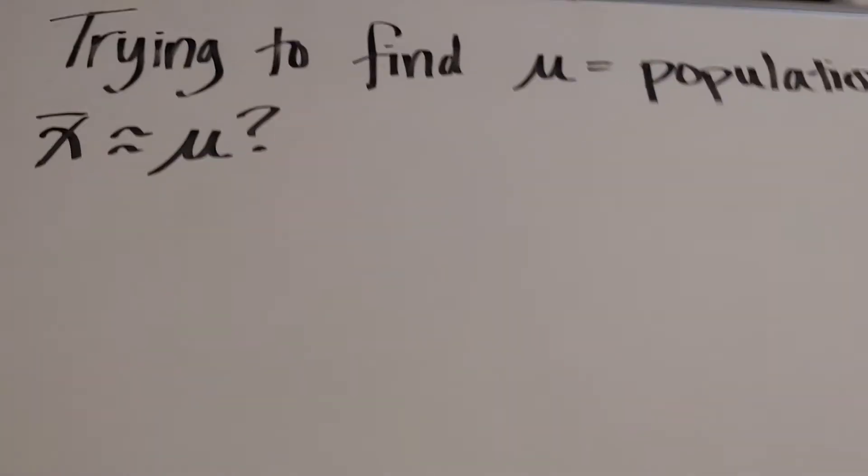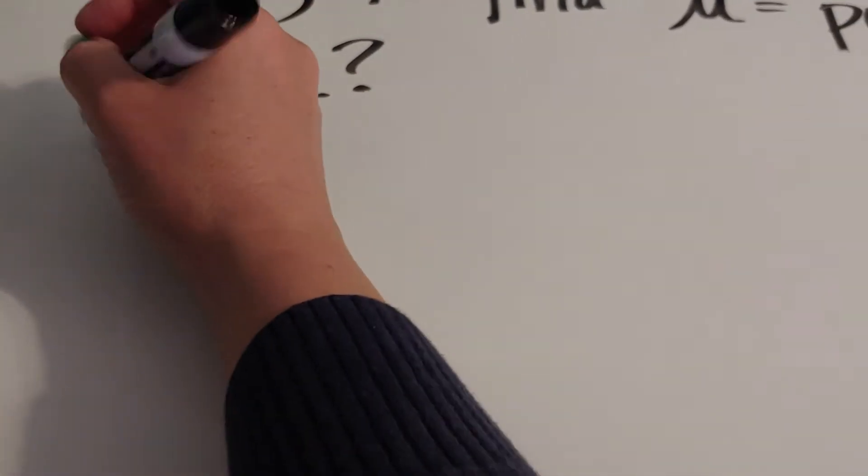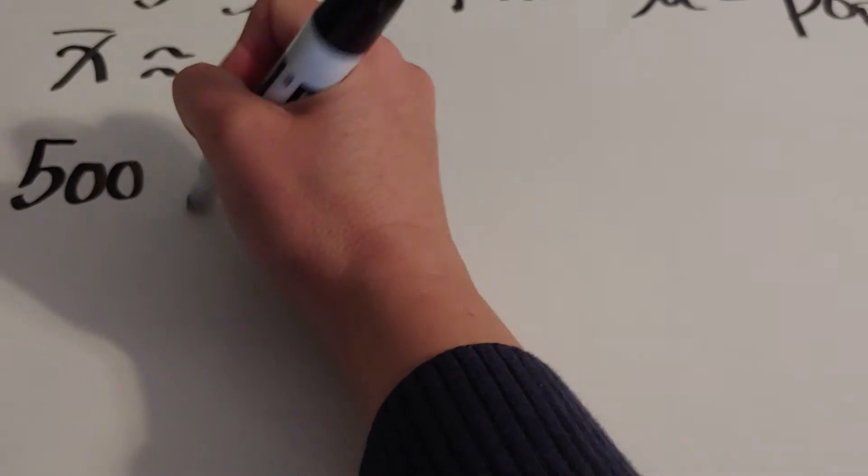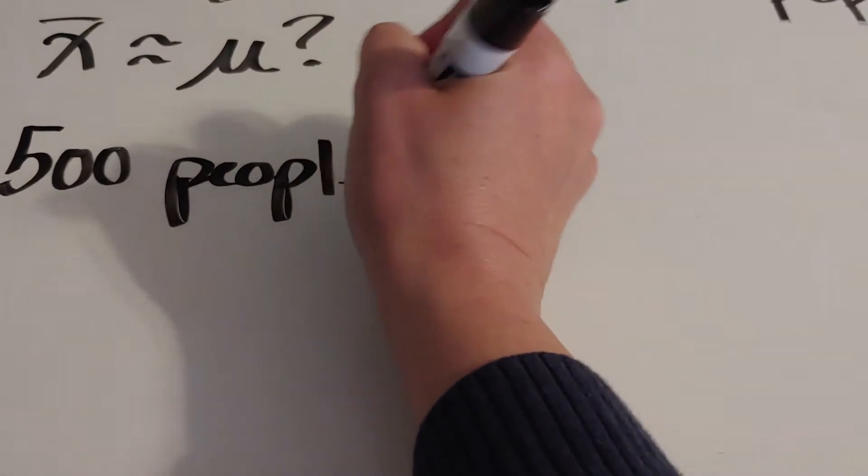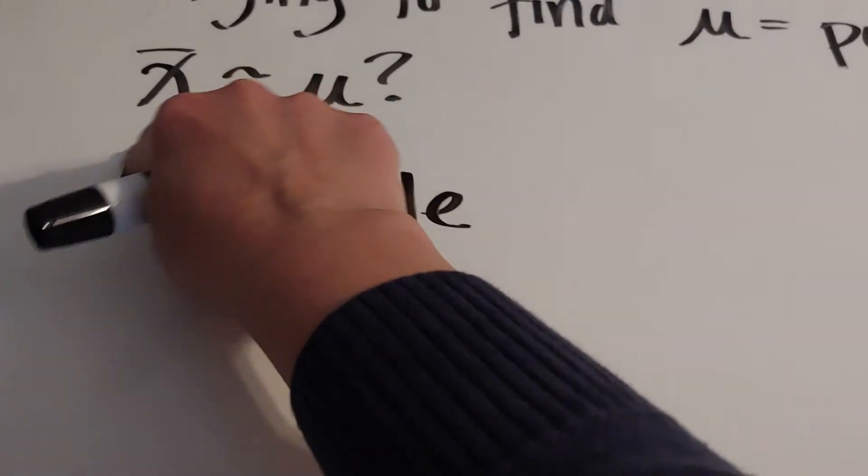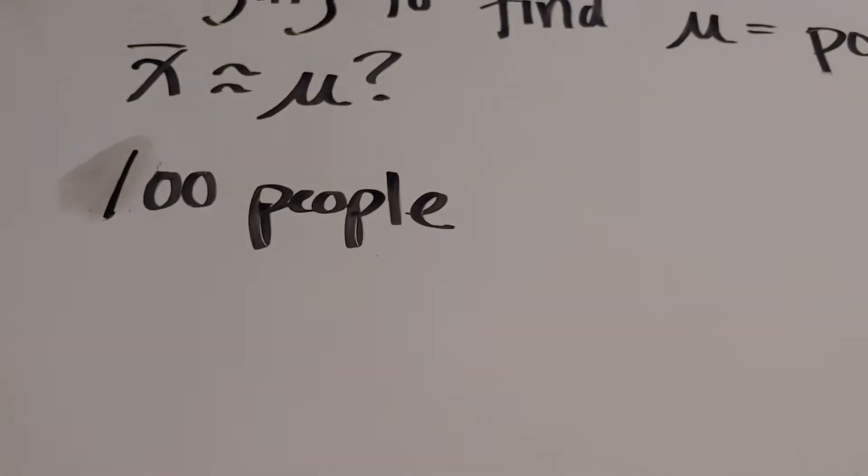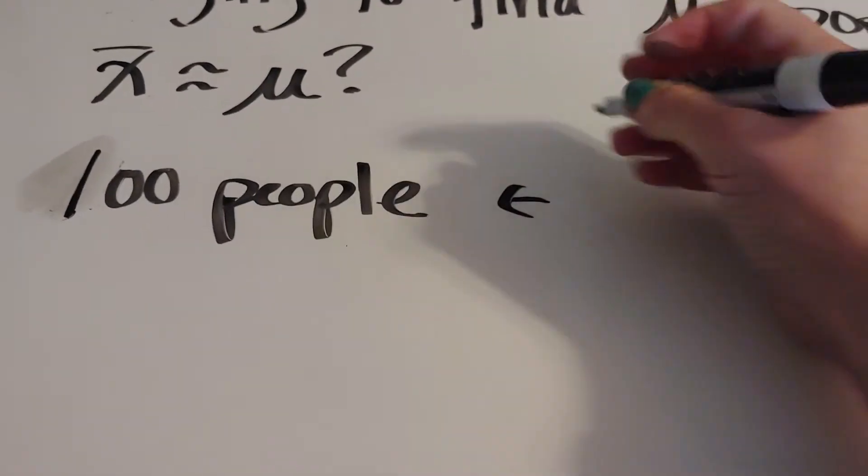Okay, what if I ask 500 people... you know what, let's not do 500. These are imaginary people, we can ask as many as we want. Let's say I ask 100 people, but let's say that I do this 20 times.